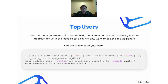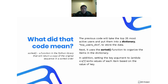Due to the large number of users we have, the users who have more activity are more important for us. So let's say we only want to see the top 25 people. The previous code will take the top 25 most active users and put them into a dictionary. Then we're going to sort all those items in the dictionary using the sorted function, which returns a copy of the original sequence in sorted order. We're also setting the key argument to a lambda function that sorts the values of each item based on the value of the key.